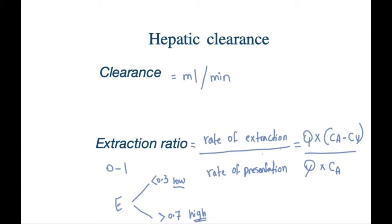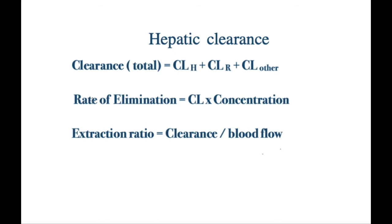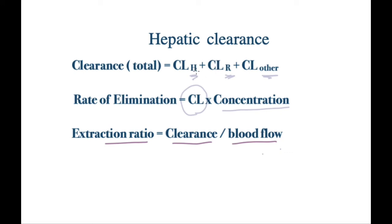Now let's move on to some important equations for hepatic clearance. The total clearance equals the clearance done by the liver plus the clearance done by the kidneys (renal clearance) plus the clearance done by other organs. The rate of elimination — which is different from clearance — is the clearance itself multiplied by the concentration of the blood. The extraction ratio equals the clearance over the blood flow. These equations will help us get the hepatic clearance and extraction ratio for drugs, which are important in calculations of drug doses and adjustment of dosage regimens for each specific case.